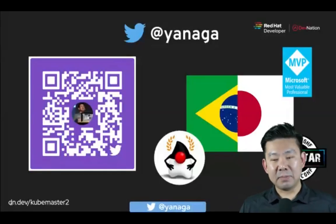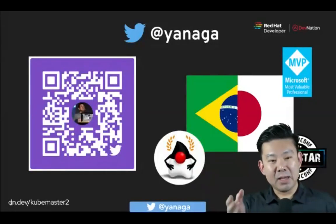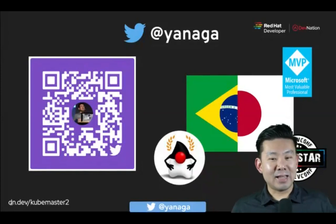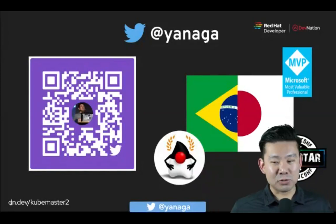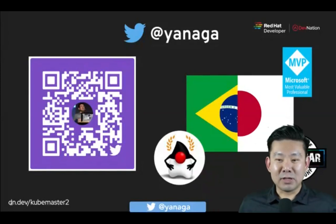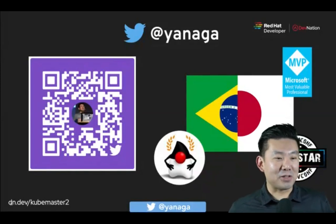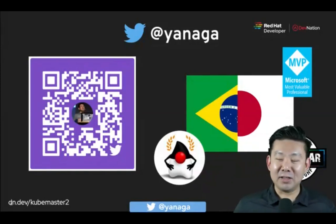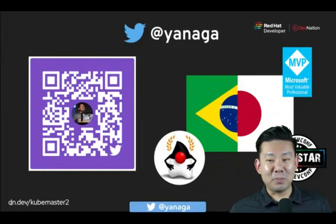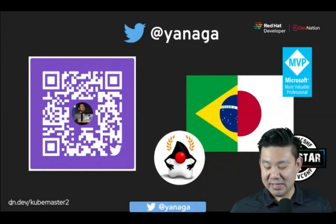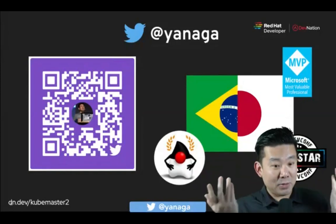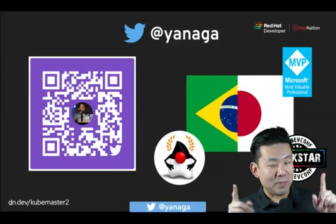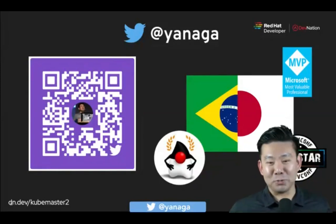I introduced myself last time, but again my Twitter is at Yanaga. I talk a lot about Java, DevOps, microservices, cloud computing, and of course Kubernetes and OpenShift these days. And I'm also a Japanese Brazilian — not the typical Brazilian you would expect, but yes, it's true.